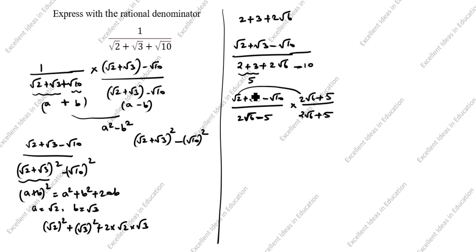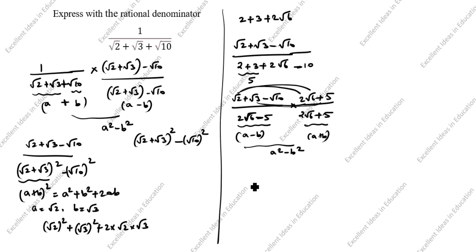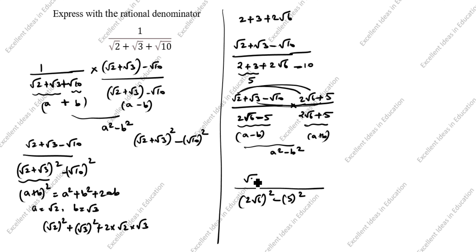We multiply numerator by numerator and denominator by denominator. First for the denominator: we have the form (a minus b)(a plus b), so the formula gives a squared minus b squared. Here a is 2 root 6 and b is 5. For the numerator, multiplying root 2 into 2 root 6 gives 2 root 12. Multiplying root 2 into 5 gives plus 5 root 2. Next, plus root 3 into 2 root 6.